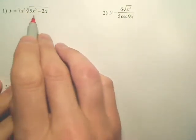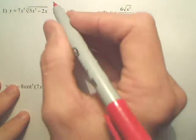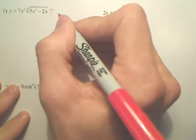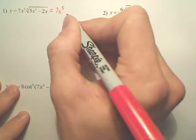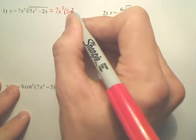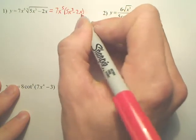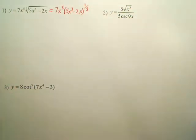Alright, we're going to derive this. This is a product rule. First thing I would want to do though is rewrite it as 7x to the 5th and then make this 5x cubed minus 2x to the 1/3 power. That would be my first step.